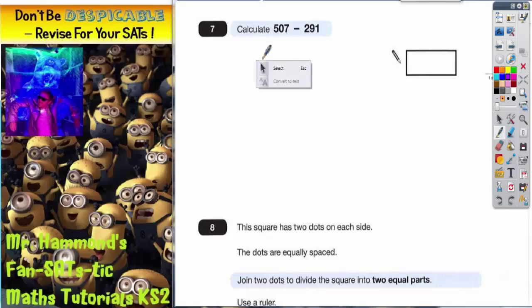We've got 507 subtract 291. They will deliberately set the question out side by side to test whether or not you can set it out with one number on top of the other.